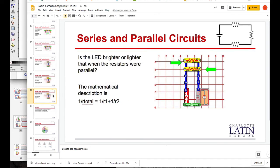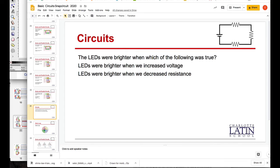Is the LED brighter or lighter than when the resistors were in series? I think you're going to find that it was brighter. So resistance total actually goes down. Think of these like pipes. By adding more and more pipes, you're still going to get more water into the system. Believe it or not, if you want to decrease when parallel, they're in parallel right now. The LEDs were brighter when we increased voltage. The LEDs were brighter when we decreased resistance. And those are both true.